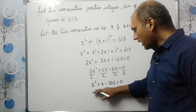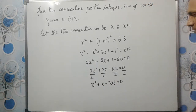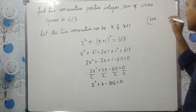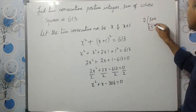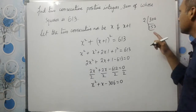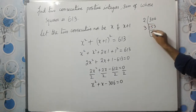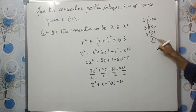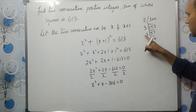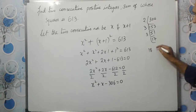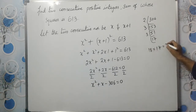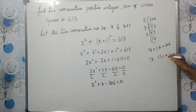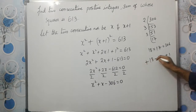Now we need to use either the quadratic formula or factorization to solve this. I am using the factorization method. We need factors of 306 whose sum is 1. Dividing 306 by 2 gives 153, and the sum of digits of 153 is 9, so divide by 3 to get 51, then divide by 3 again to get 17. So 306 equals 2 times 3 times 3 times 17. We can use 18 and 17: their product is 306 and their difference is 1, which matches our middle term of plus 1. So we write the middle term as plus 18 minus 17.